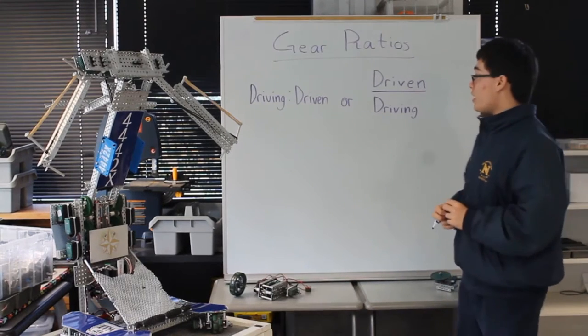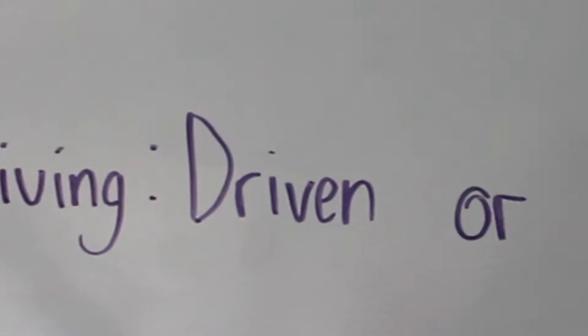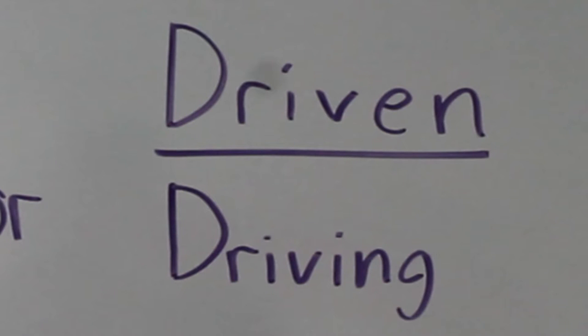A gear ratio can be given in two different ways. You can use a colon and write driving to driven, or you can put it as a fraction with driven over driving.